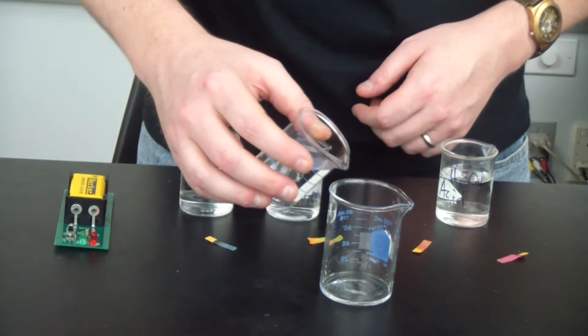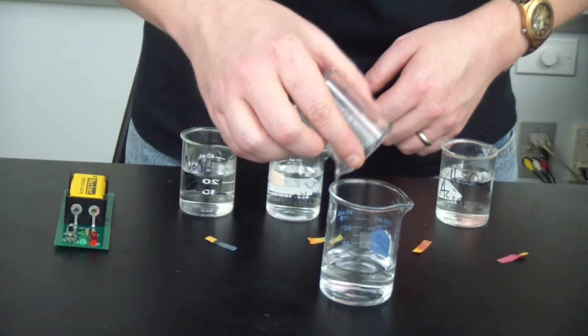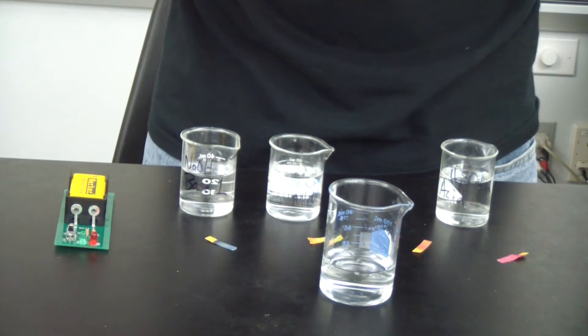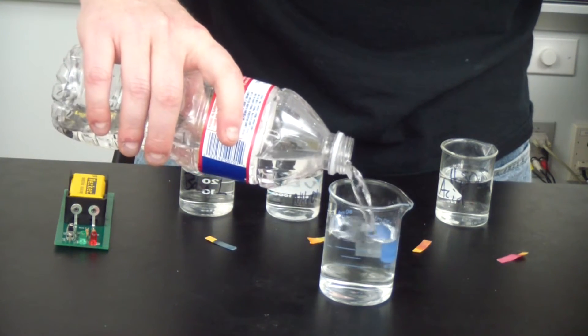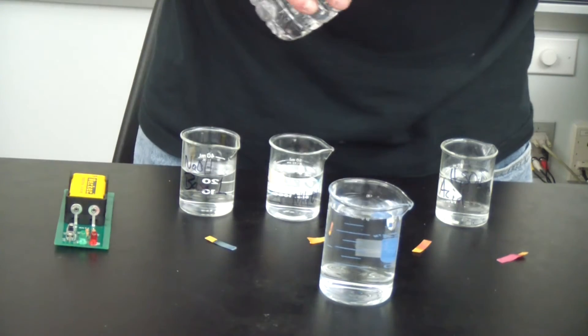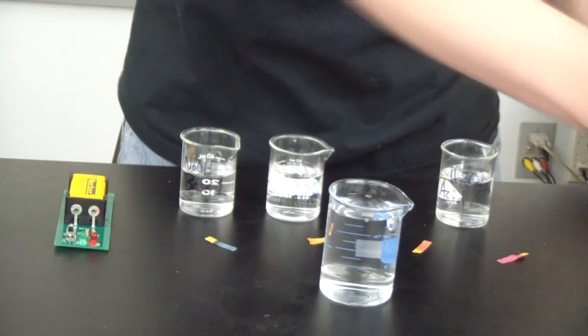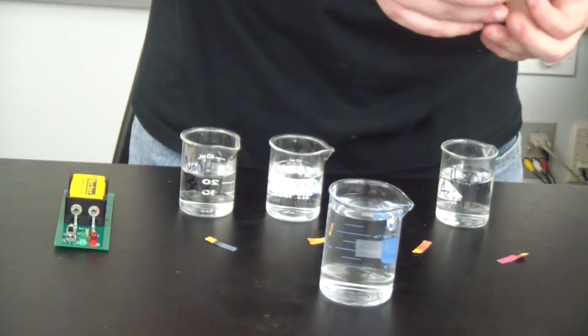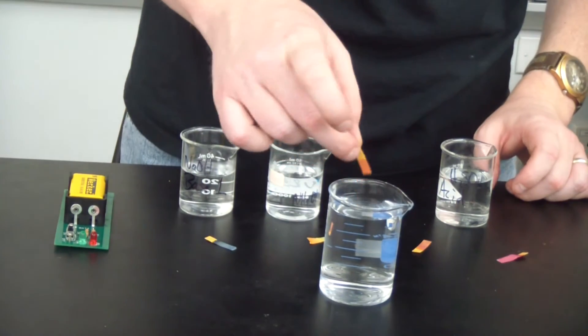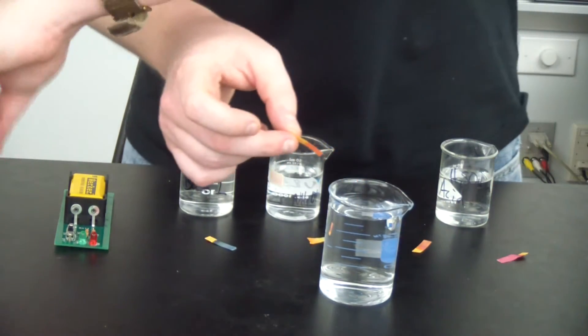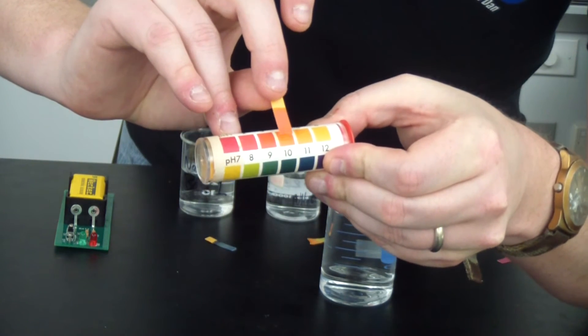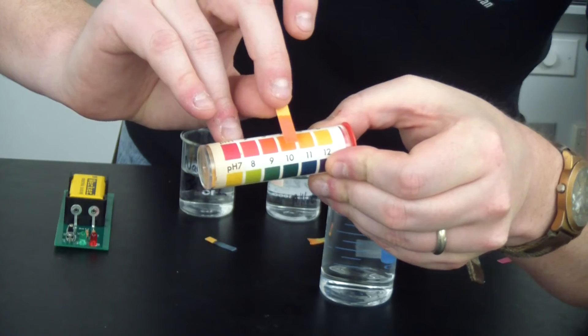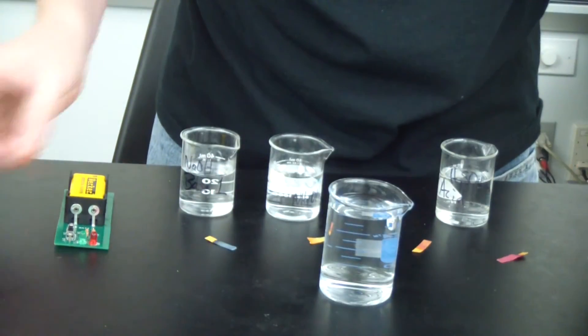So I'm going to take the vinegar, pour it into this larger beaker right here, and I'm going to dilute it with a lot of water. Really add a whole bunch of water into that. Now, I'm going to test the pH again. And the last time, it was a pH of 3. Now, it's actually closer to a pH of 4. So what does that tell us?